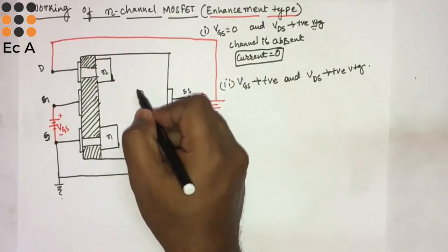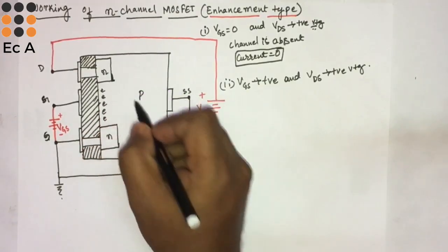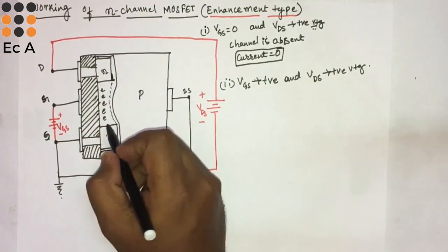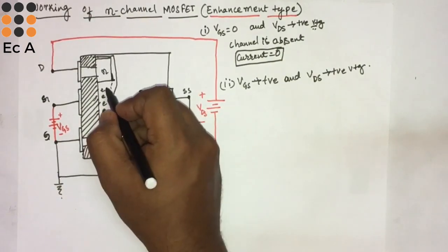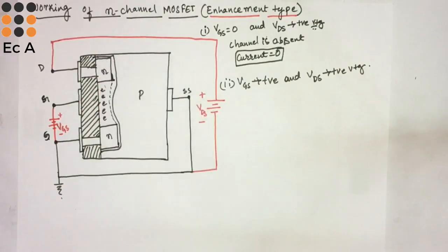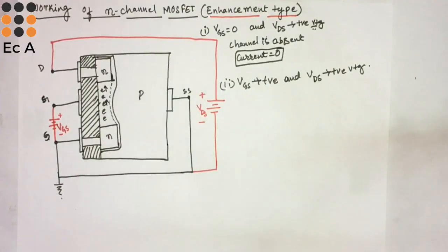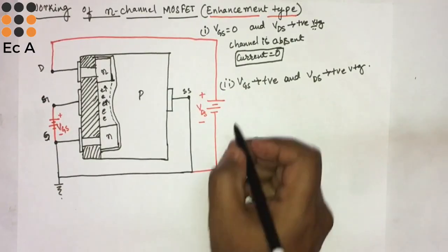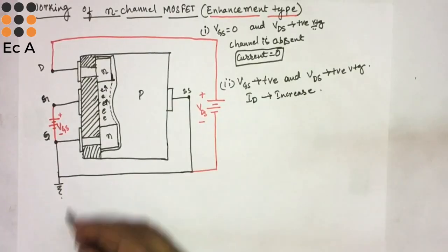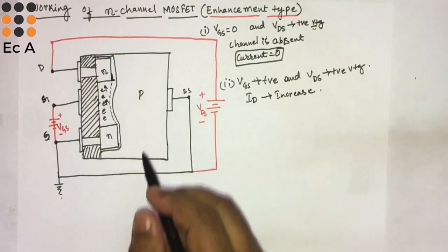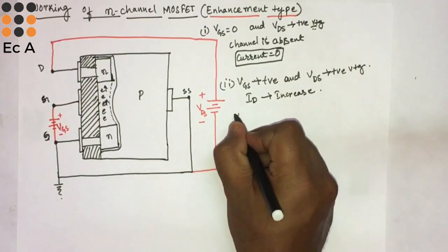Due to the positive gate voltage, electrons present in the P substrate start to accumulate towards the gate. Once a sufficient amount of electrons are accumulated towards the gate, these electrons will start moving towards the drain, constituting the drain current ID. The gate voltage at which current starts conducting is called the threshold voltage.